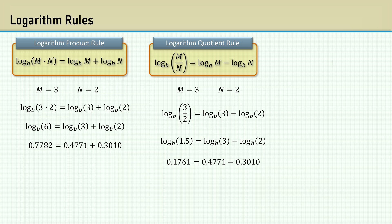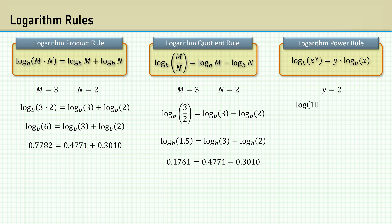The logarithm power rule states that the logarithm of x raised to the power of y is y times the logarithm of x. Let y equal 2. The left side is the log of 10 squared, which is the log of 10 times 10. Using the logarithmic product rule, this can be stated as the log of 10 plus the log of 10, which is equal to 2 times the log of 10.